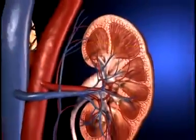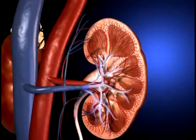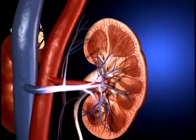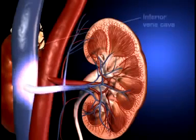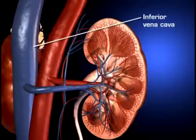The peritubular capillaries rejoin to form the venous channels by which blood leaves the kidneys and empties into the inferior vena cava.